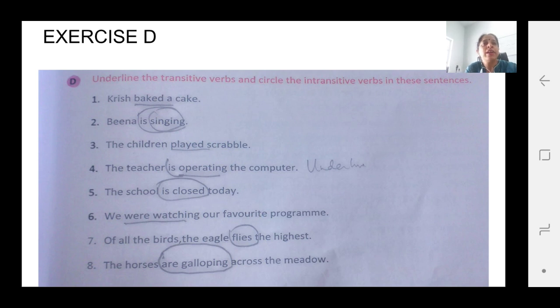Krish baked the cake. Now baking it cannot be only single. It has to be you have to identify whether it is baking a cake or a biscuit. So baked is a transitive verb. Beena is singing. Underline is singing. So singing does not require singing what? Singing a song only.